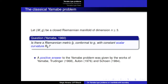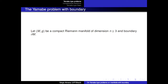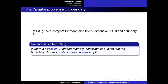A positive answer is given after a series of four papers — very important contributions to the field. The answer is yes. For manifolds with boundary, let's consider the problem proposed by Escobar. It asks whether it's possible to find a conformal metric that is scalar flat and has constant mean curvature on the boundary.